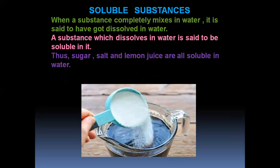Soluble substances: When a substance completely mixes in water, it is said to have dissolved in water. A substance which dissolves in water is said to be soluble in it. Sugar, salt, and lemon juice are all soluble in water — when they disappear in water, we say they are soluble. You can see this practically in your house.